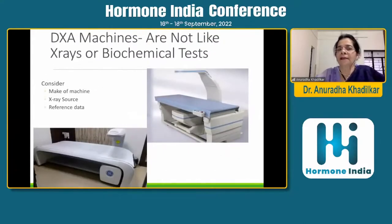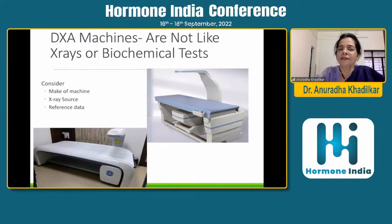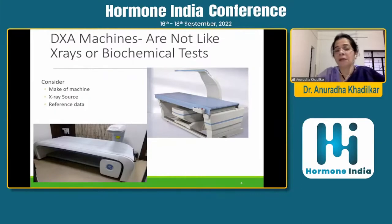DEXA machines are not like X-rays or biochemical tests where you can simply compare one result with another. You need to consider the make of the machine, the X-ray source, and the reference data. The most common makes found in India are the Hologic machine and the GE Lunar RIDEX. Most machines have different background data, so the Z-scores or T-scores computed will actually be different. The difference between two reports from two machines may not reflect a change in the patient — it may just be because of the machine.